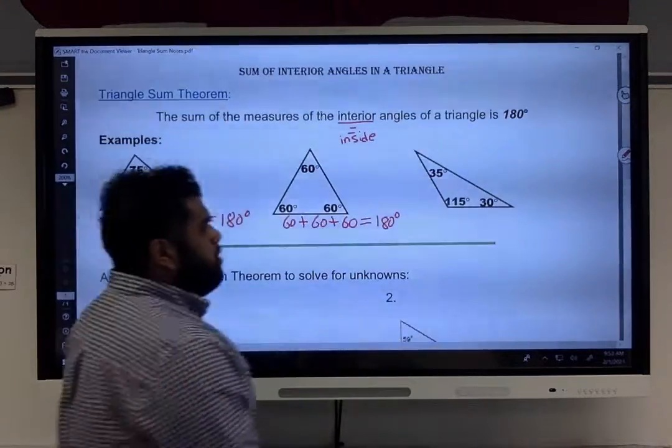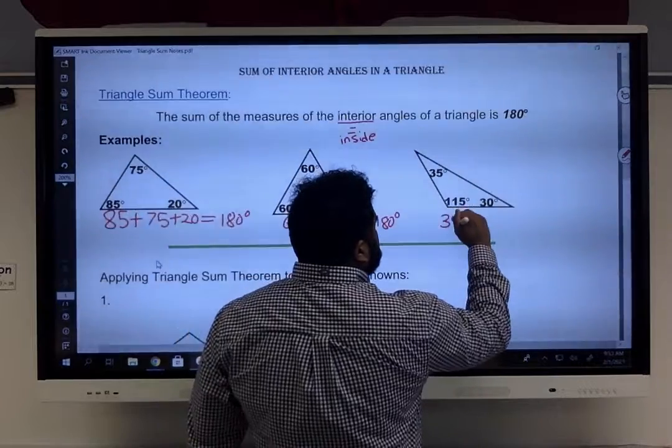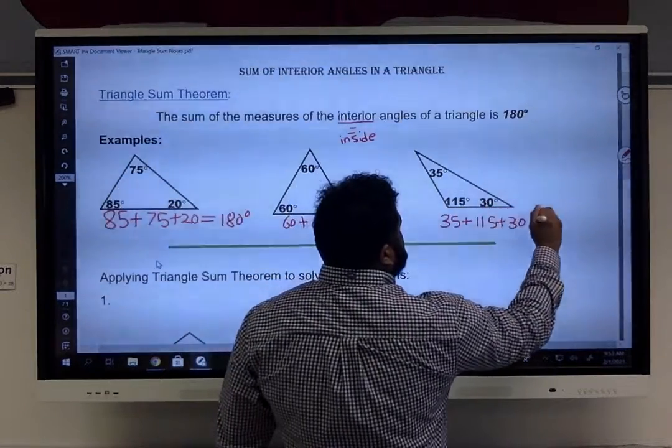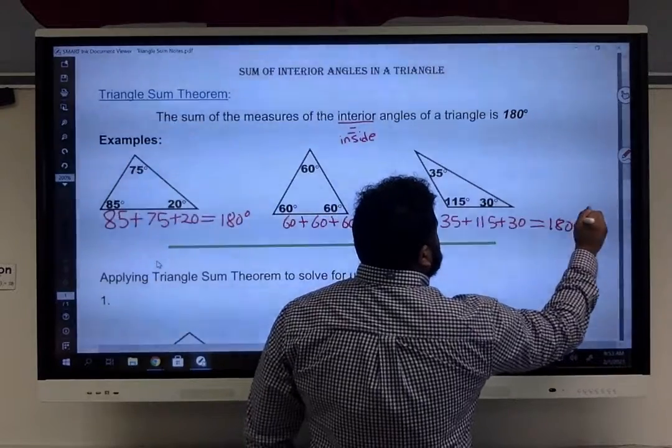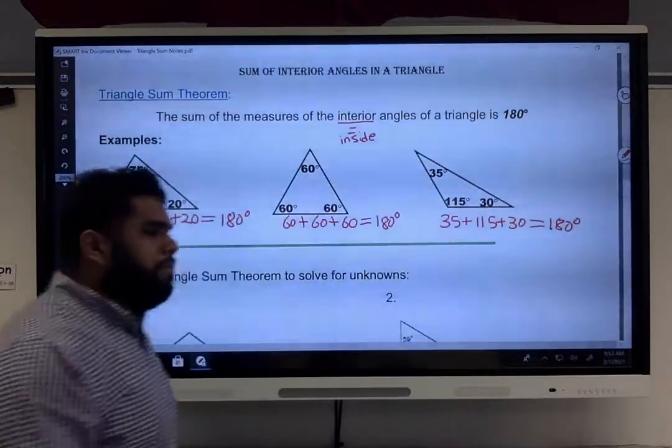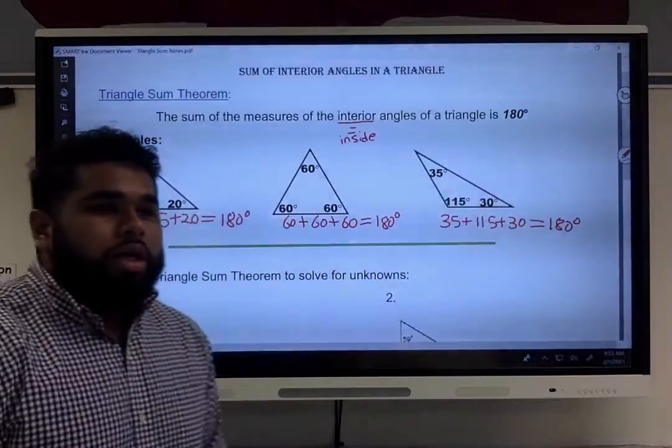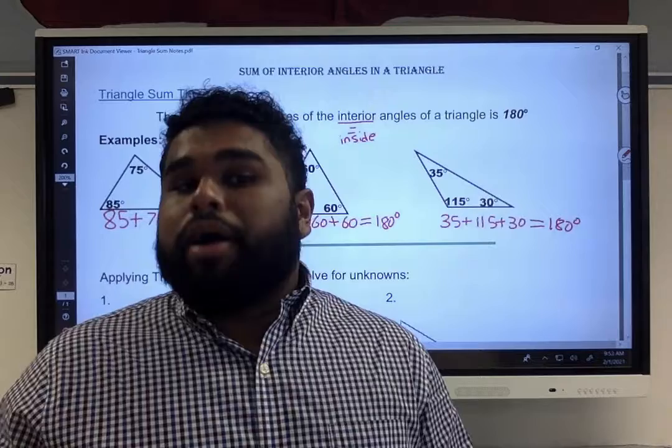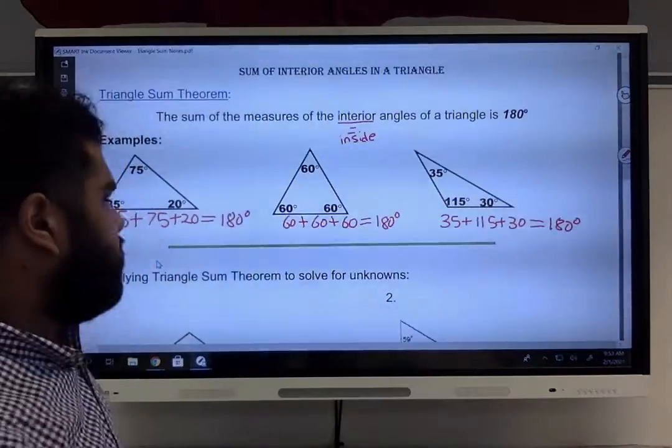Then over here, 35 plus 115 plus 30 equals 180 degrees. So again, the measurements of all the angles inside of a triangle must add up to equal 180 degrees.